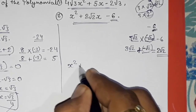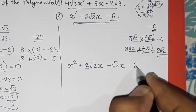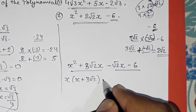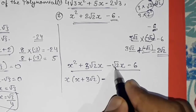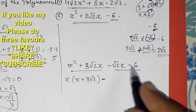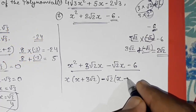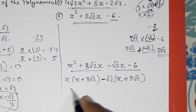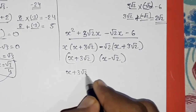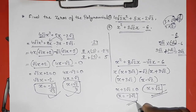Rewriting: x² + 3√2x − √2x − 6. From the first two terms, x is common: x(x + 3√2). From the last two terms, take out minus and also √2 as common, since 6 = 3 × √2 × √2, giving −√2(x + 3√2). The factors are (x + 3√2)(x − √2). Setting each to zero: x + 3√2 = 0 gives x = −3√2, and x − √2 = 0 gives x = √2.